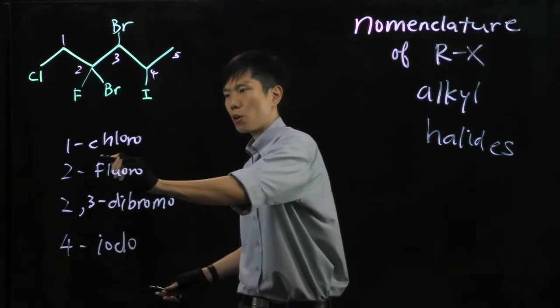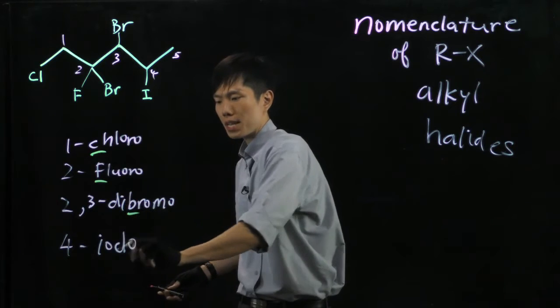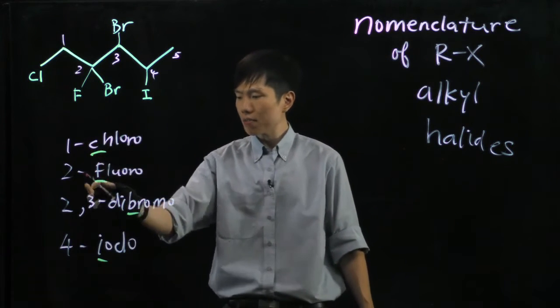And now let's arrange them. We compare C, F, B and I. B comes before C, then F, then I. Alright.